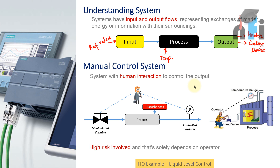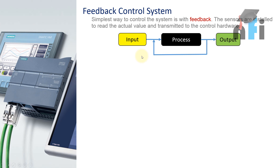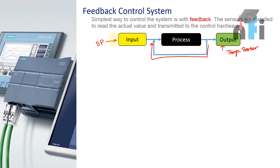After manual control comes automatic control, also called feedback control. In a feedback control system, a value from the output is fed back to the input. To get this feedback, sensors are installed at the output — for example, temperature sensors installed on a furnace that send the temperature value back to the input. Here we have a set point, which is matched with the sensor value, and the process then actuates or deactuates the heaters or cooling devices accordingly.